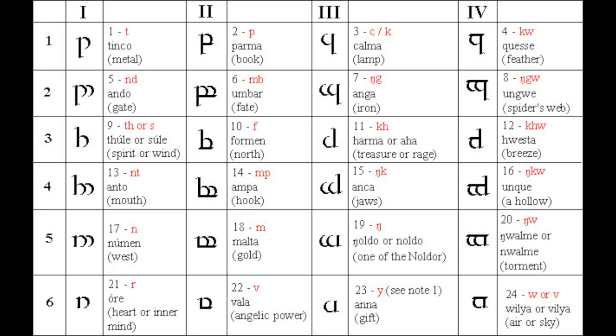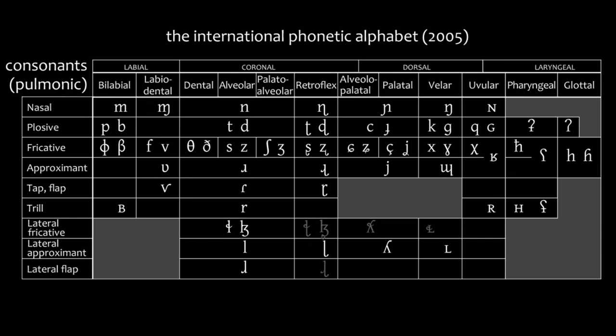And here is where I actually first learned these things: from the chart of Tengwar, which is the writing system used for Elvish, created by Tolkien for his Lord of the Rings Elvish languages. As with the vowel chart, I'm not going to explain every symbol here. I'm going to be concentrating on many of the ones that are especially important to me for the languages I deal with — not just Latin and ancient Greek, but also Japanese and other languages.